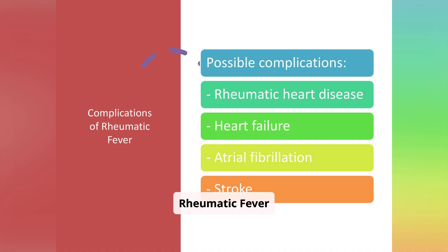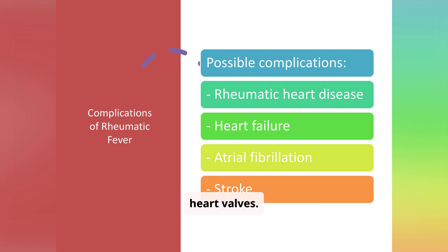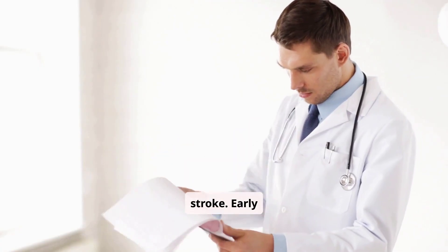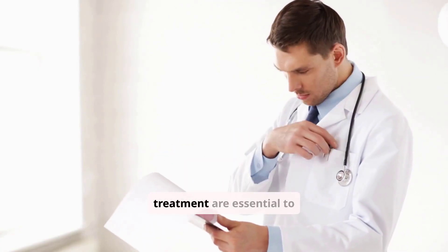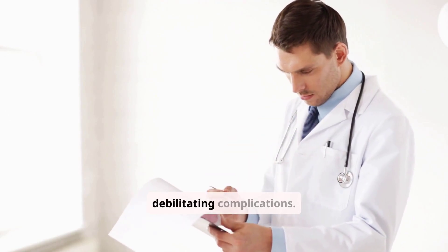Rheumatic fever can lead to several serious complications if left untreated or poorly managed. The most significant complication is rheumatic heart disease, which can cause permanent damage to the heart valves. Other potential complications include heart failure, atrial fibrillation, and even stroke. Early diagnosis and appropriate treatment are essential to minimize the risk of these debilitating complications.